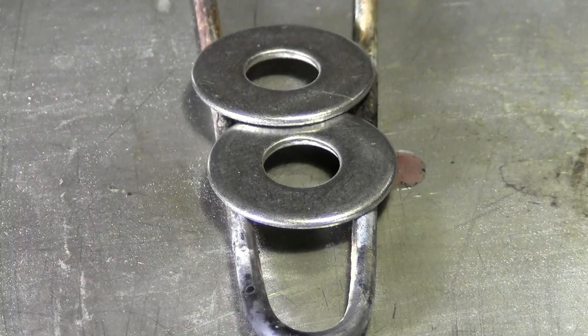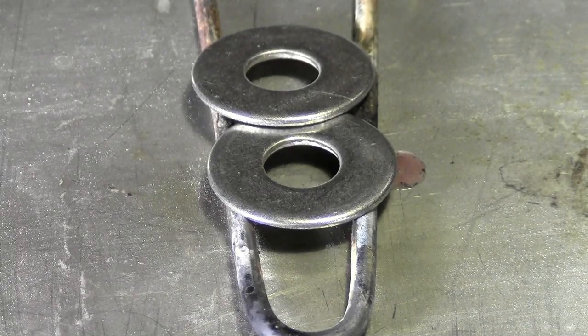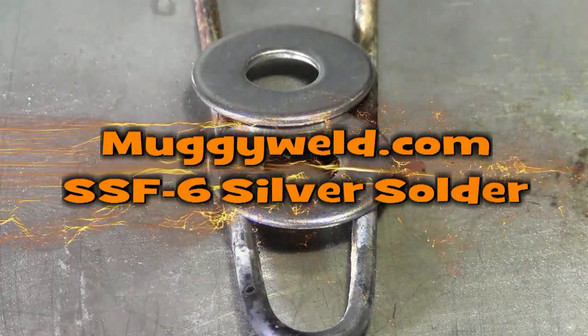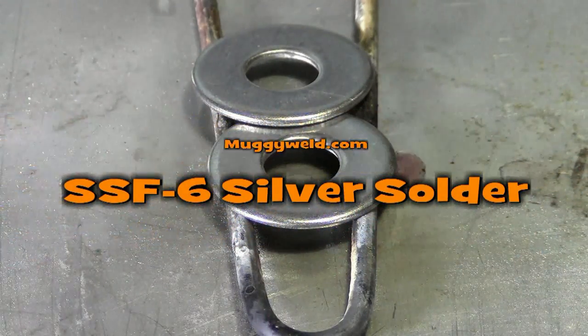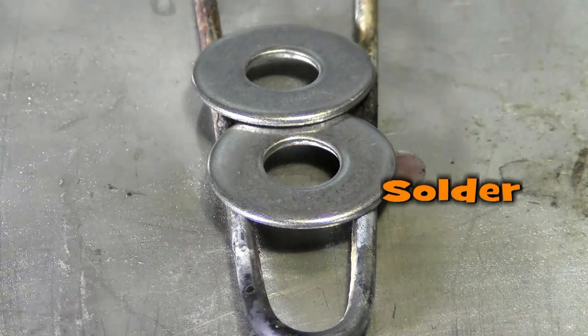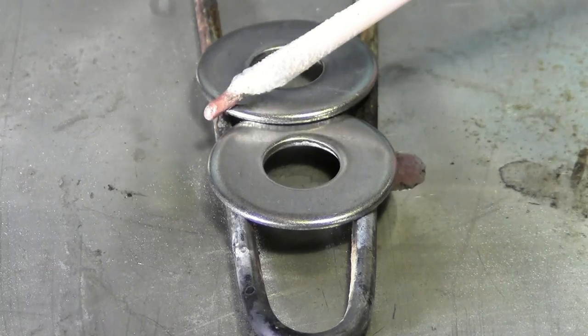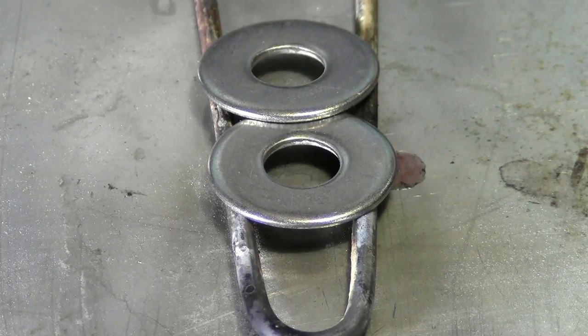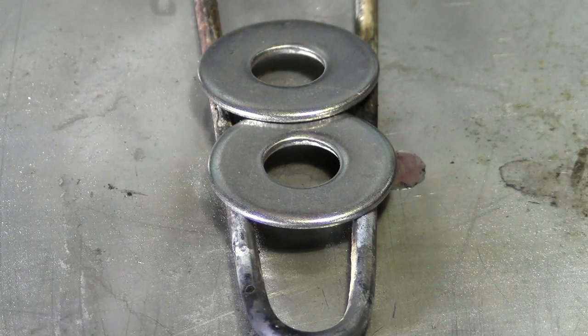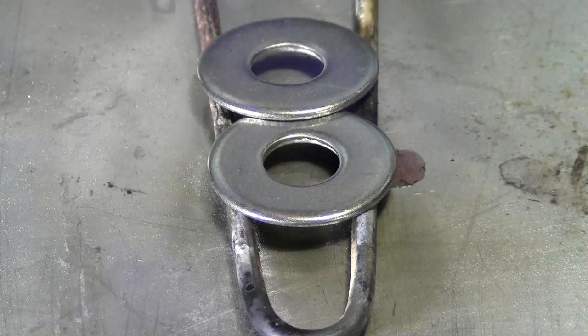In this demonstration we're going to use the SSF6 silver solder and a couple pieces of stainless washers just to show you what to look for. We're trying to braise this at 1150 degrees with our SSF6 and propane torch.